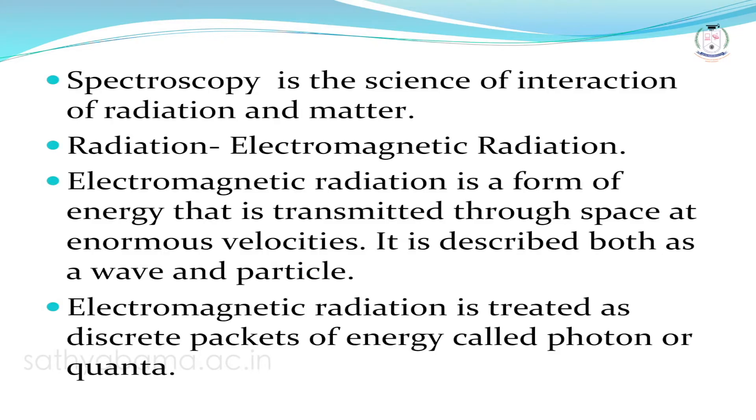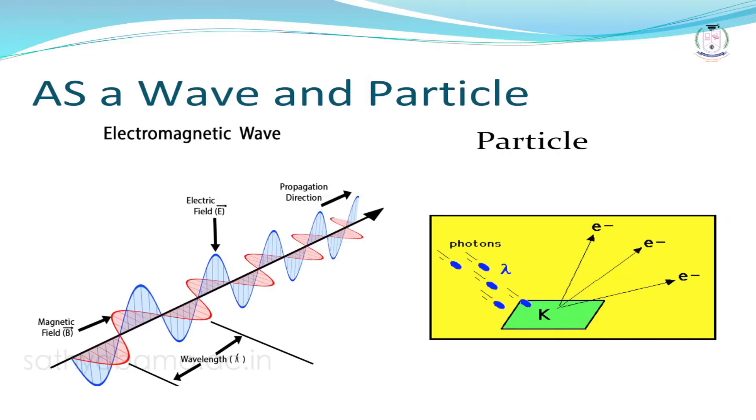Electromagnetic radiation is a form of energy which travels through space with enormous velocities. This electromagnetic radiation can be described both as a wave function and as a particle. The wave nature is characterized by an electrical field oscillating perpendicular to the magnetic field, with both oscillating perpendicular to the direction of propagation.